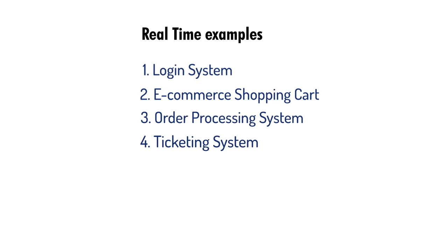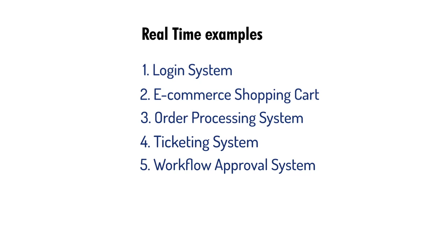A ticketing system with states like open, assigned, in progress, and closed — covering events like ticket creation, assignment to user or team, status updates, and ticket closure, validating proper assignments and closure with necessary notifications. A workflow approval system with states like draft, pending approval, approved, and rejected — testing events like submitting drafts for approval, approving or rejecting requests, handling changes or resubmissions, and ensuring appropriate notifications triggered by state transitions. Many more real-world examples exist for state transition testing.